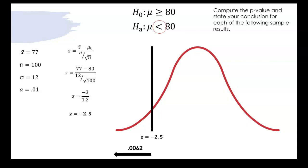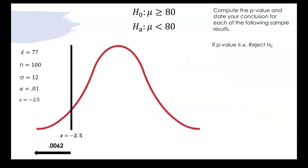So when we need to find our conclusion here our p-value is 0.0062 our alpha is still 0.01 and so since our p-value is less than our alpha we reject our null hypothesis.